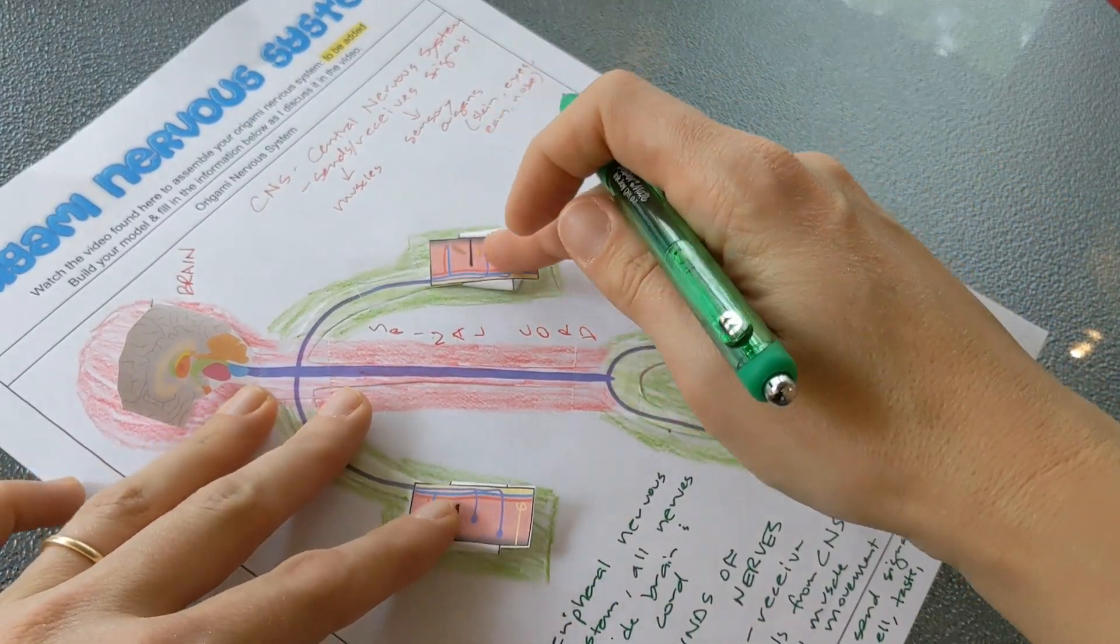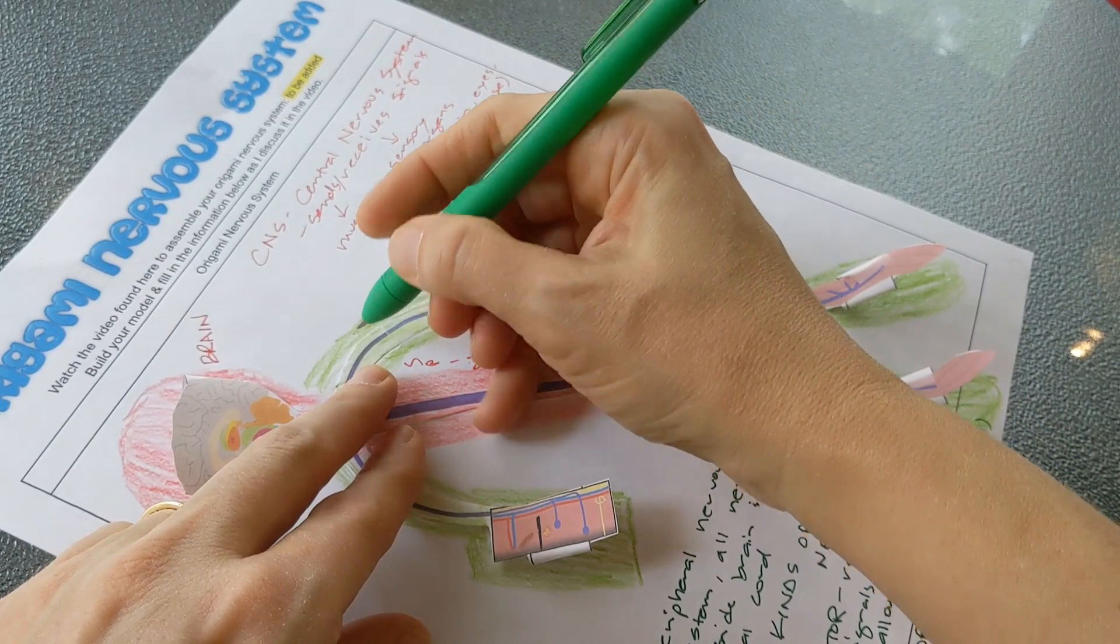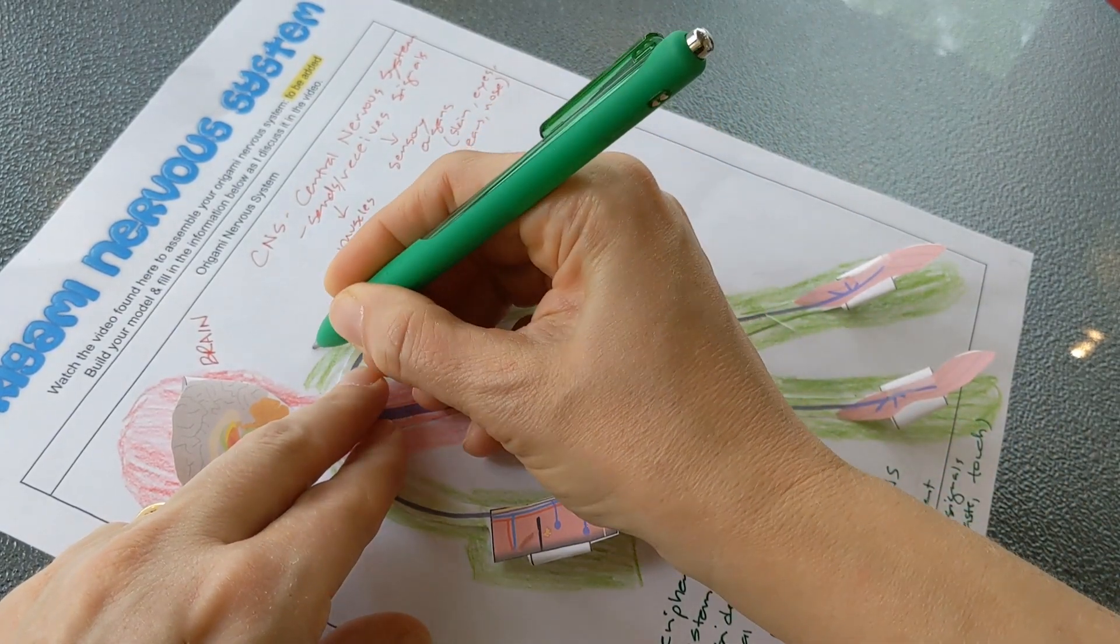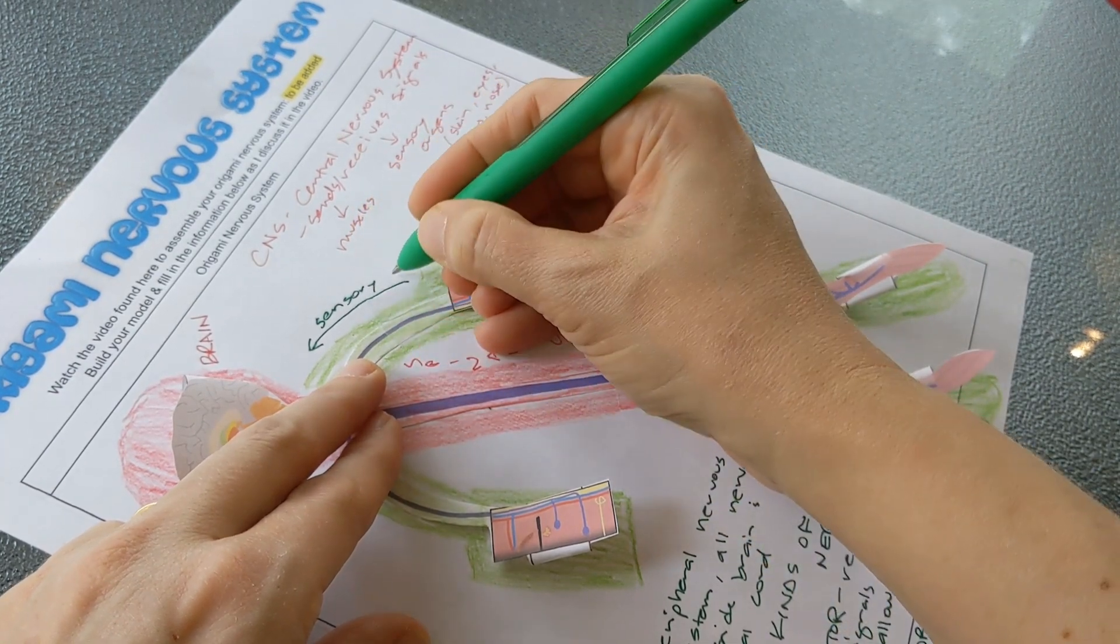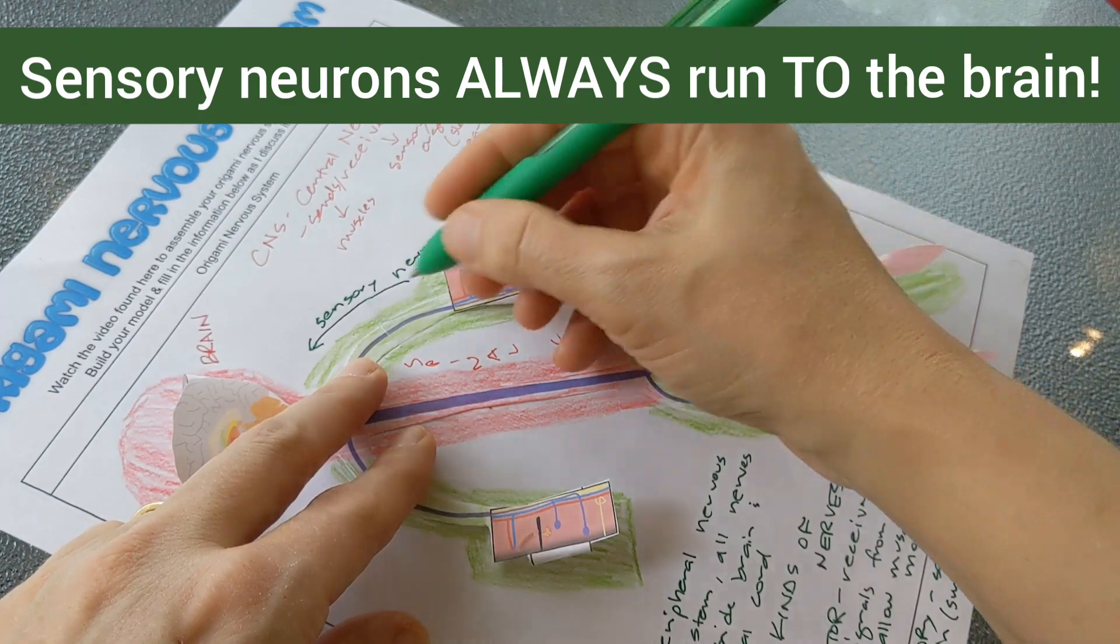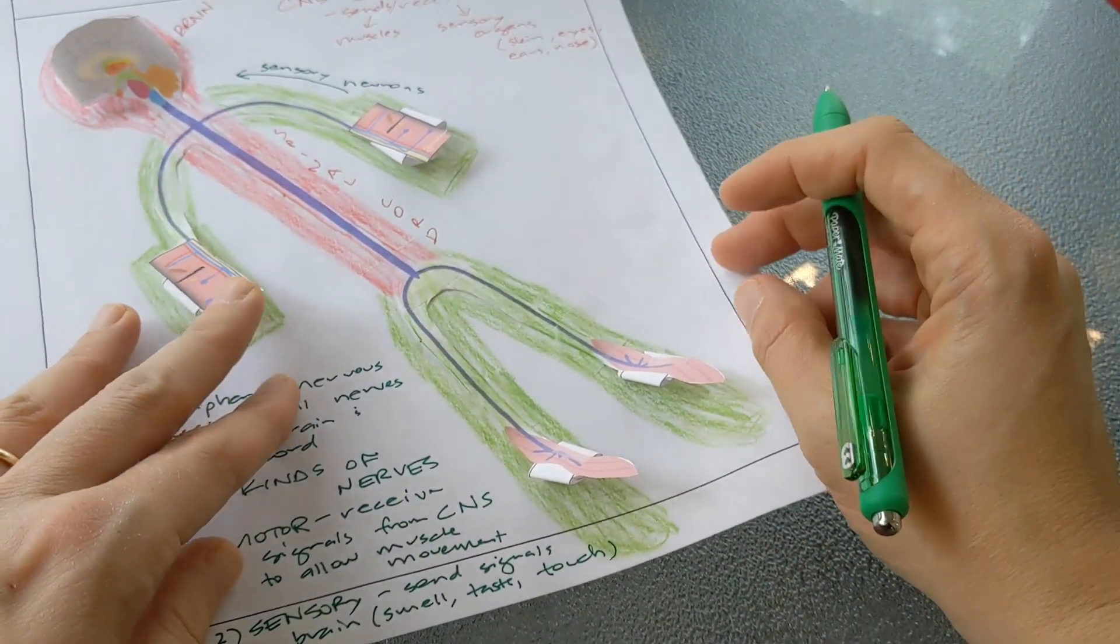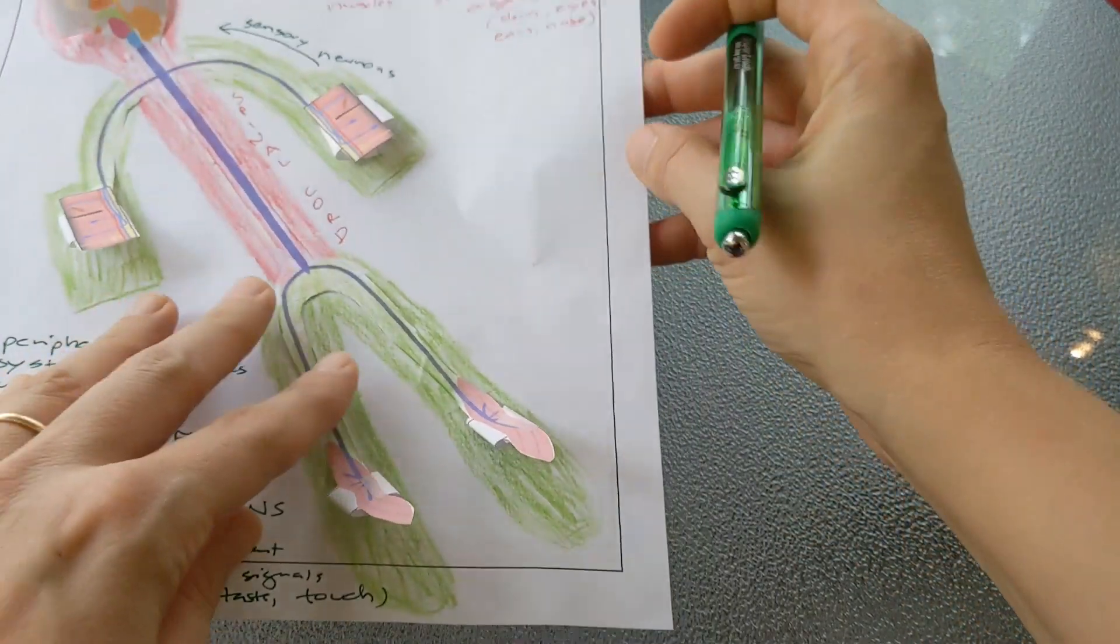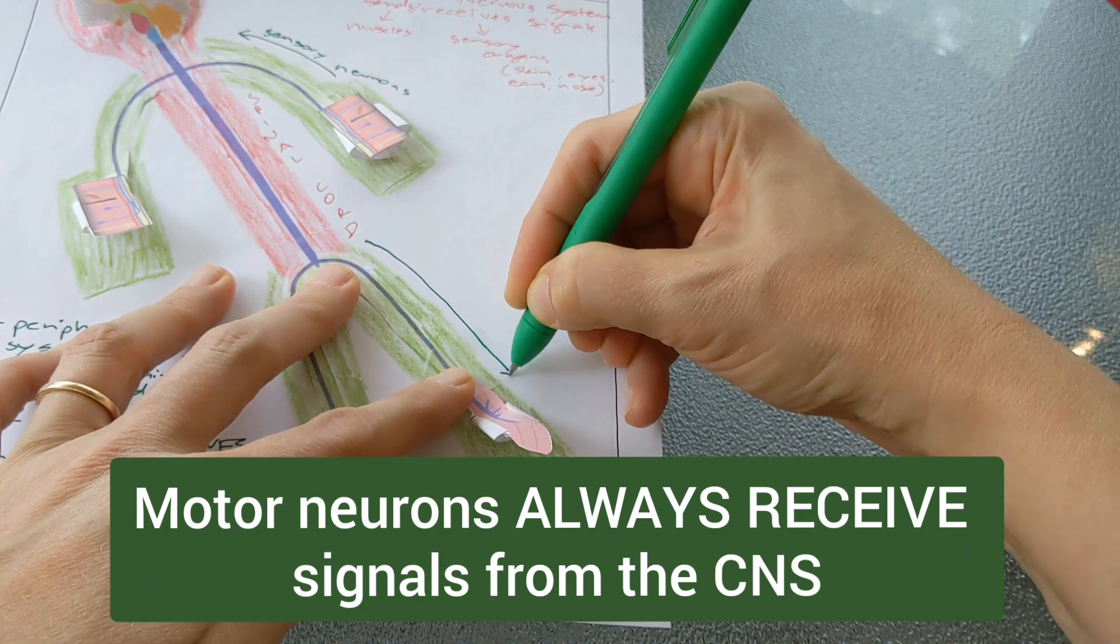In the arms you'll see their skin and so that represents a sensory organ and that means we're showing sensory neurons running this way. You could just as easily have shown motor neurons in the arms, but they chose to show sensory neurons there. And then in the legs they're representing motor neurons so we have the signal running the opposite way from the brain.